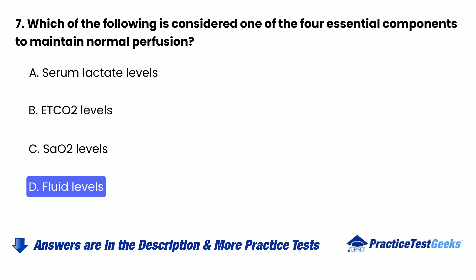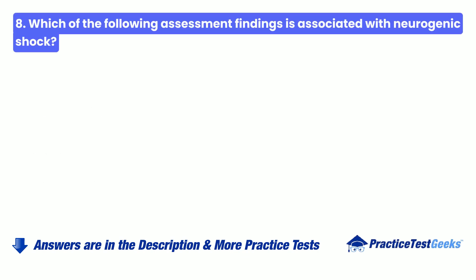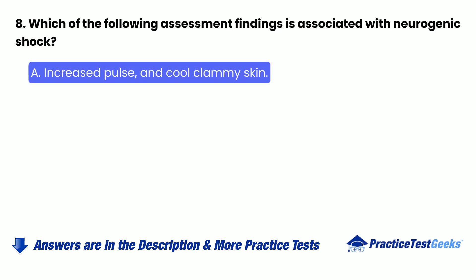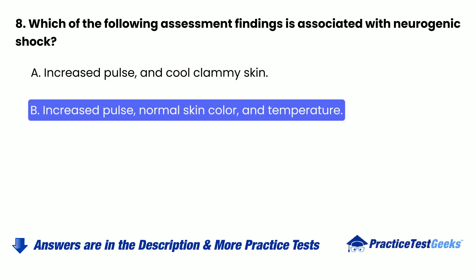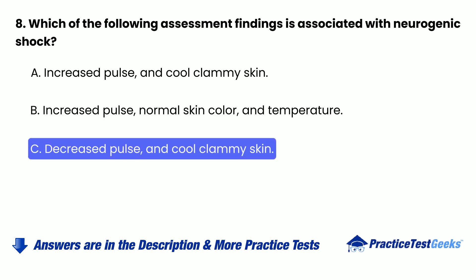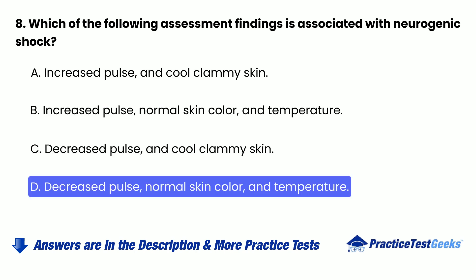Question 8: Which of the following assessment findings is associated with neurogenic shock? A. Increased pulse and cool, clammy skin. B. Increased pulse, normal skin color, and temperature. C. Decreased pulse and cool, clammy skin. D. Decreased pulse, normal skin color, and temperature.